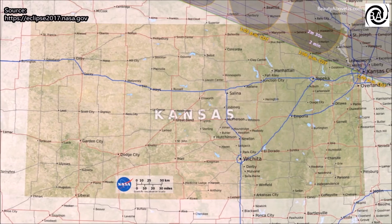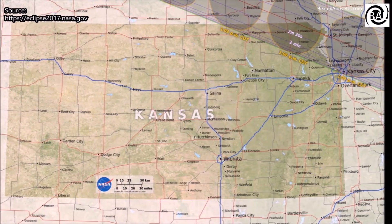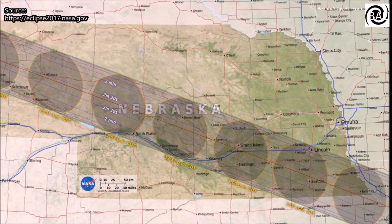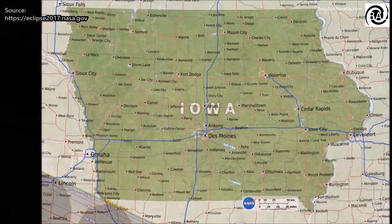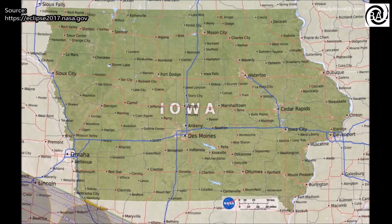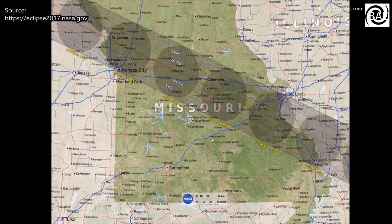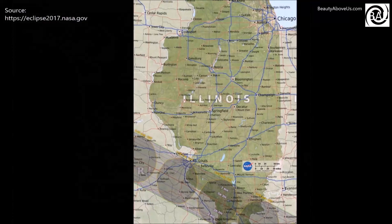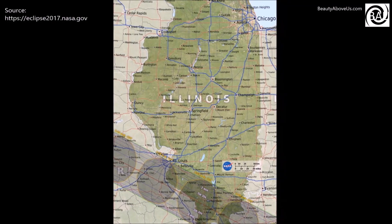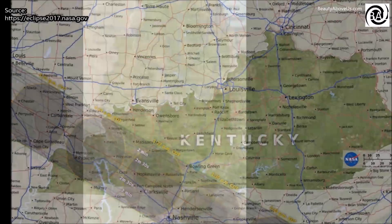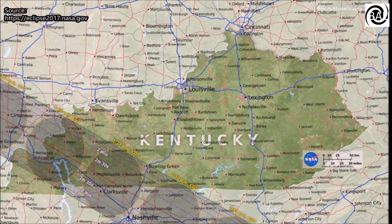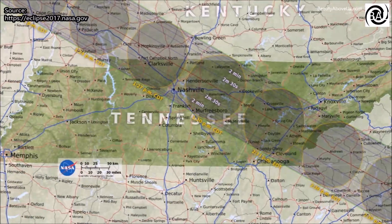The lunar shadow enters the United States near Lincoln City, Oregon, at 9:05 am PDT. Totality begins in the United States in Lincoln City, Oregon, at 10:16 am PDT. The total eclipse will end in Charleston, South Carolina, at 2:48 pm EDT. The lunar shadow leaves the United States at 4:09 pm EDT.